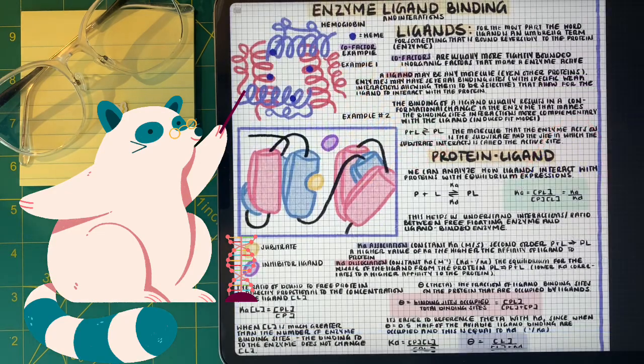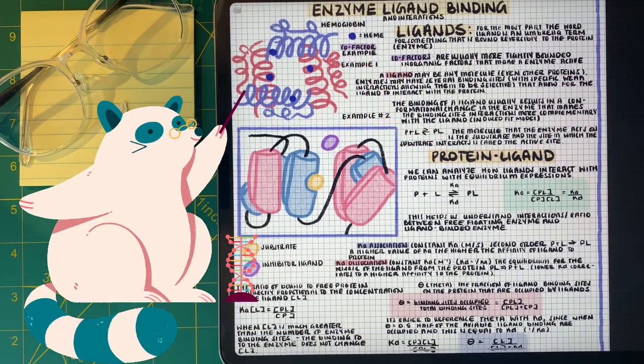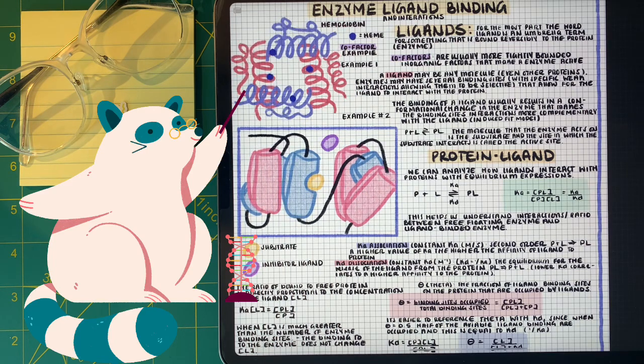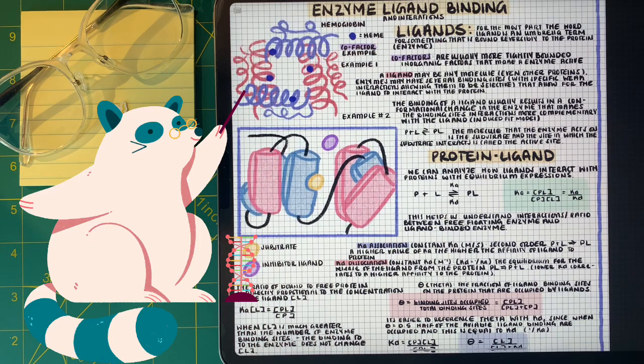So let's start off with talking about what a ligand is. A ligand is anything the enzyme or protein reacts with reversibly, so that means it can attach and detach. This is something that can be a molecule or even another protein.